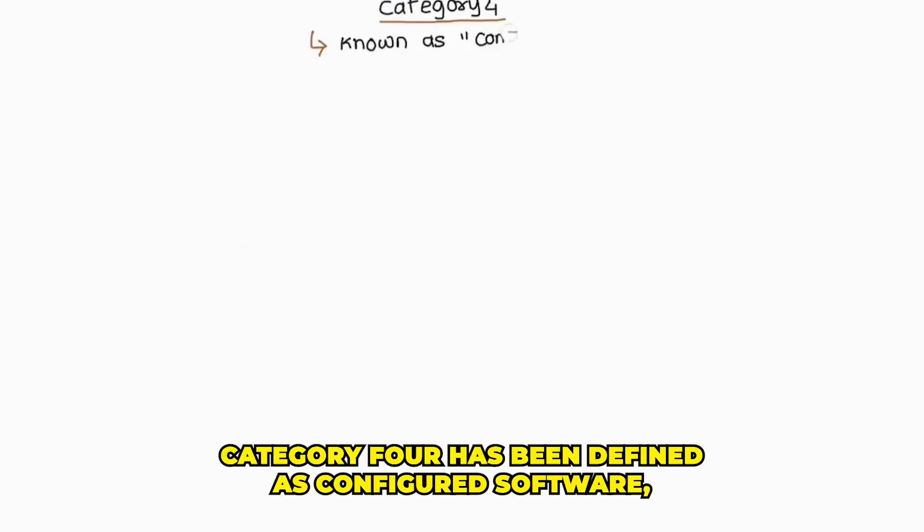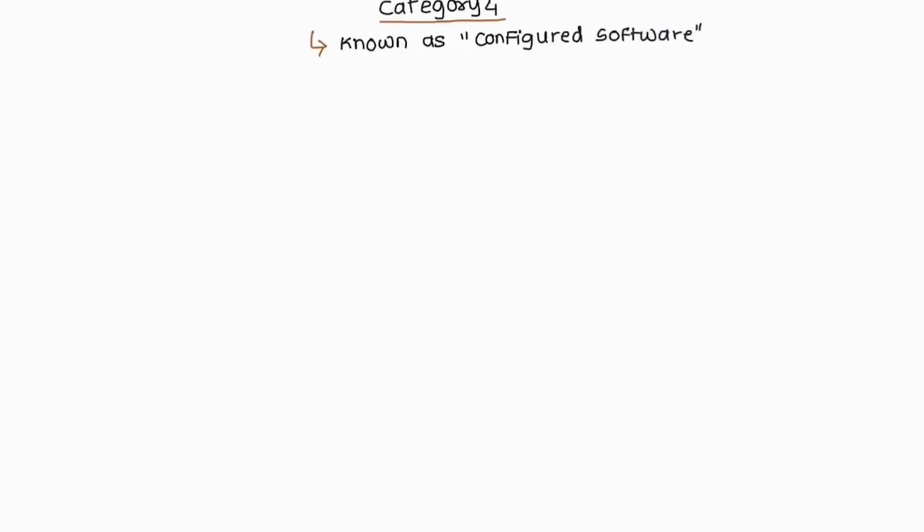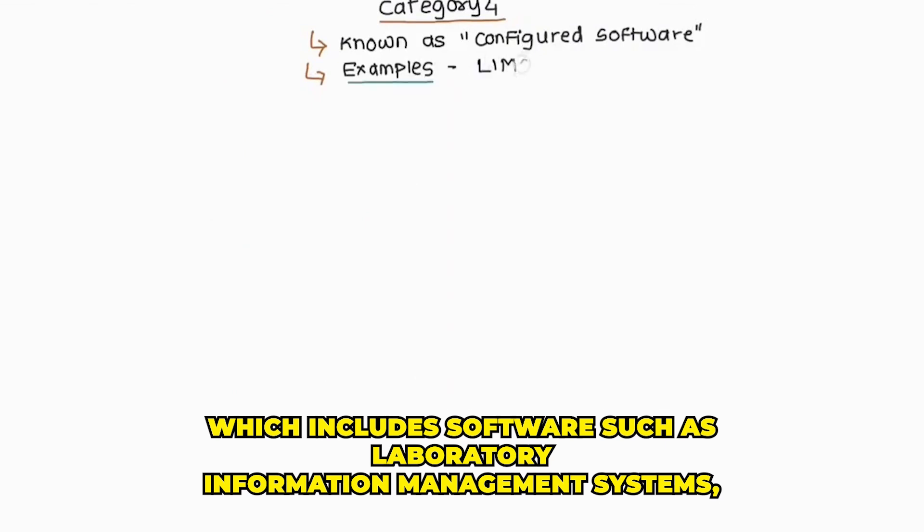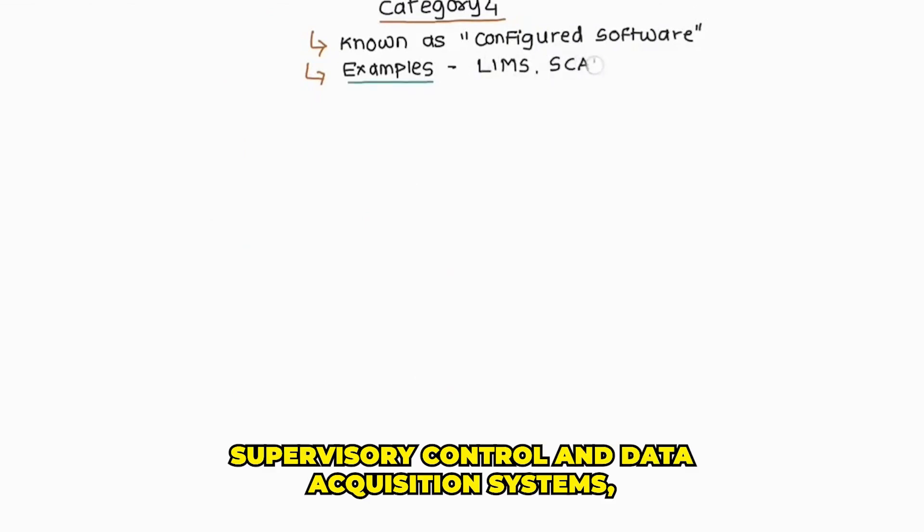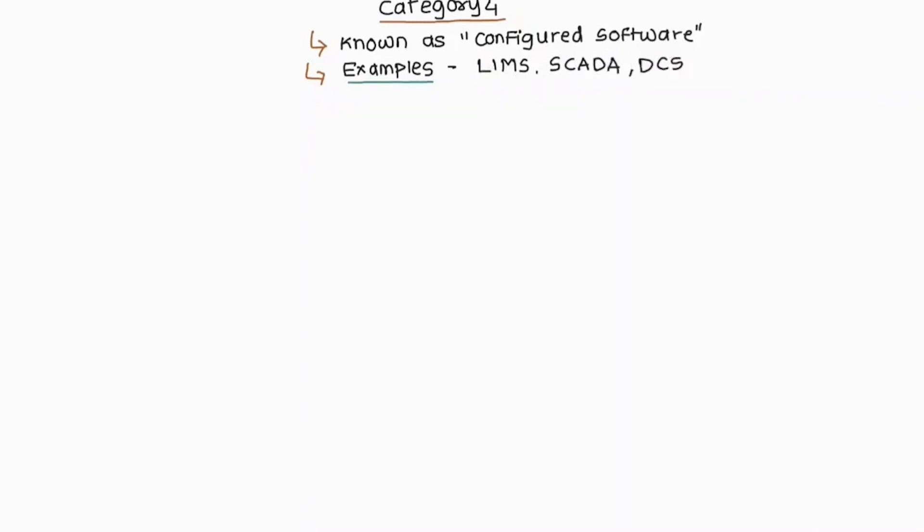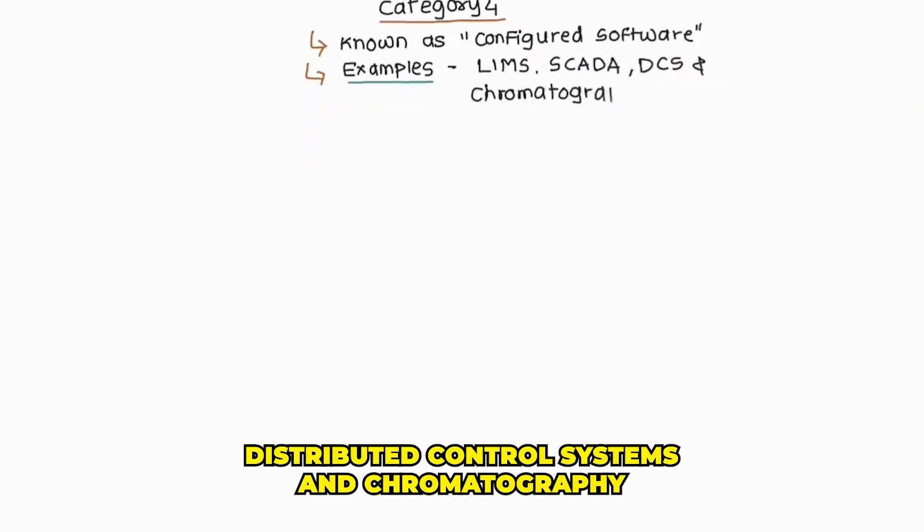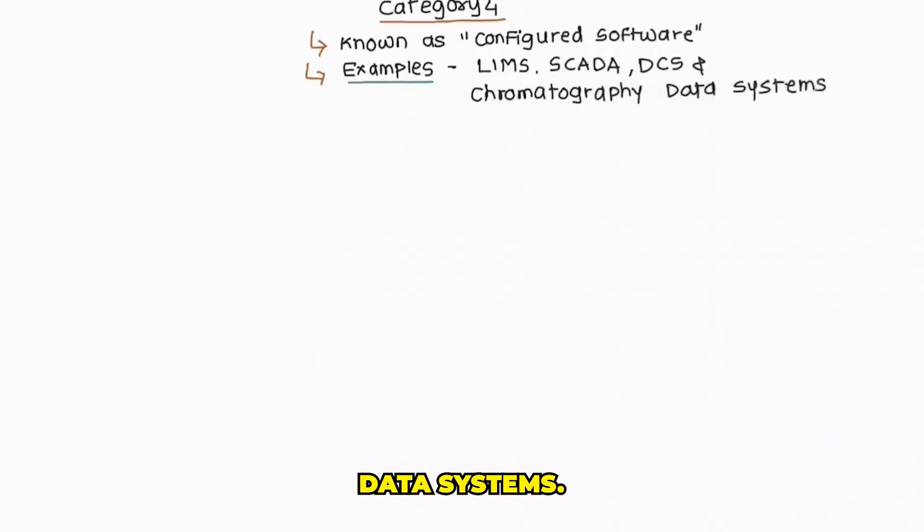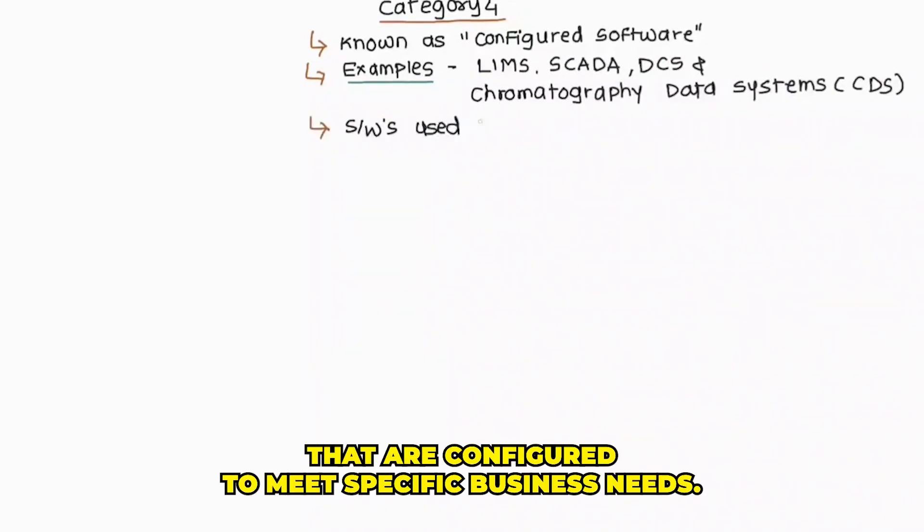Configured software includes software such as laboratory information management systems, supervisory control and data acquisition systems, distributed control systems, and chromatography data systems. These are examples of software that are configured to meet specific business needs.